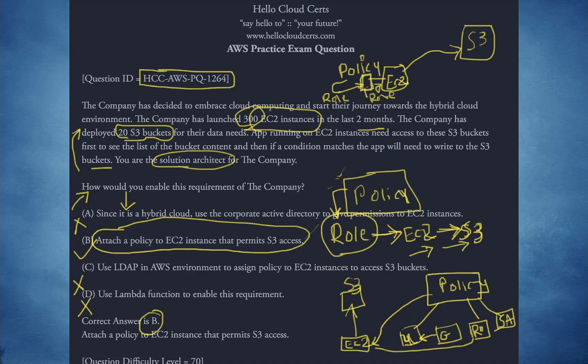A lot of students don't quite get it, so make sure you understand it because it's important — it's going to harass you. If you don't understand it very well, this concept will be troublesome in multiple AWS exams, so get it right. Do some labs — I have several labs on this as well. That should do it for this question: HCC AWS PQ 1264. Thank you very much. Bye-bye.